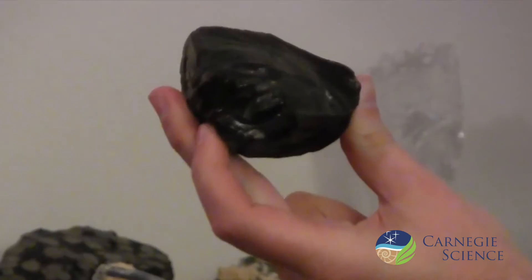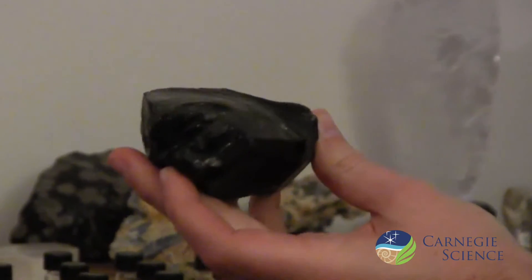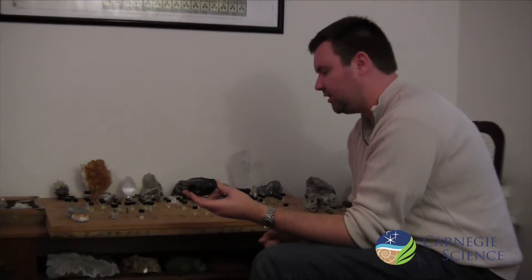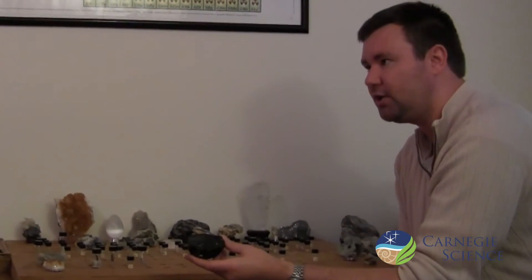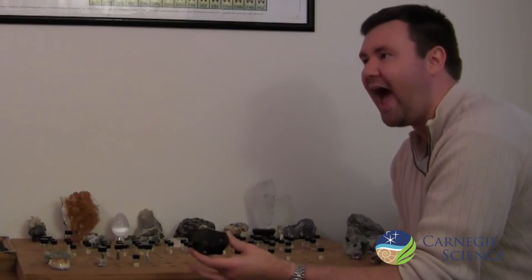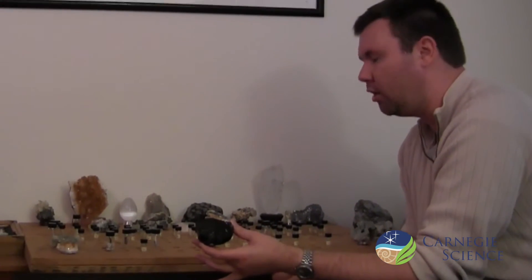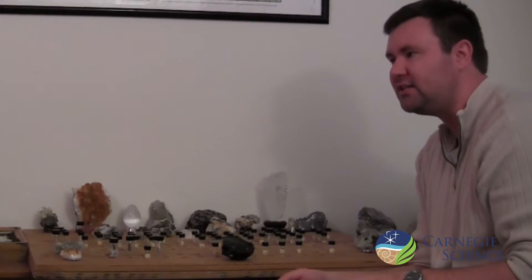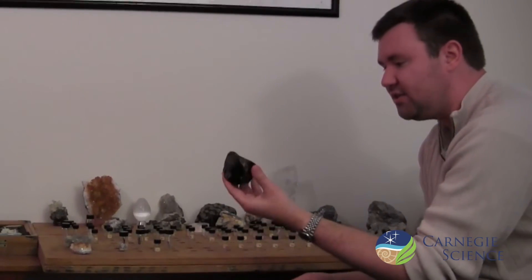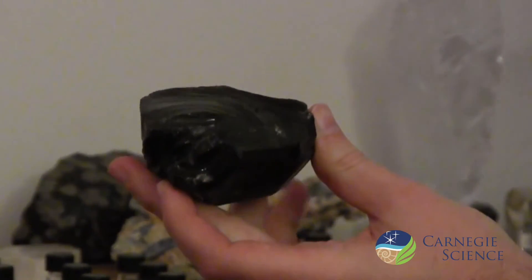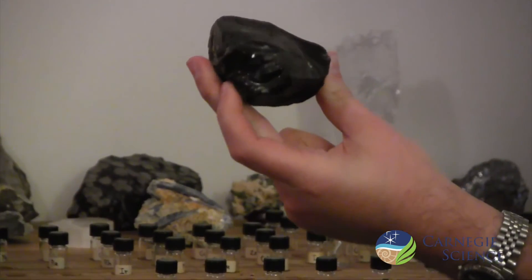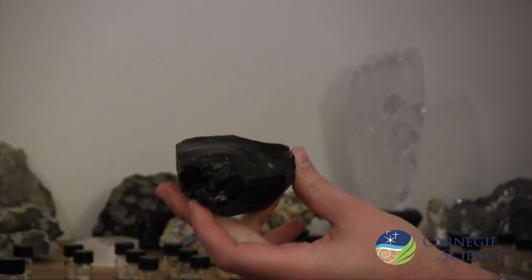This is obsidian, this shiny black rock here. It's actually not a mineral, but it is a rock. The reason it's not a mineral is that minerals by definition all have a periodic crystal structure. That means the atoms of the crystal are arranged in a particular order that repeats over and over again, just like bricks in a brick wall. Whereas the atoms in this obsidian sample are jumbled up—they're disordered, they don't have any long-range order to them.